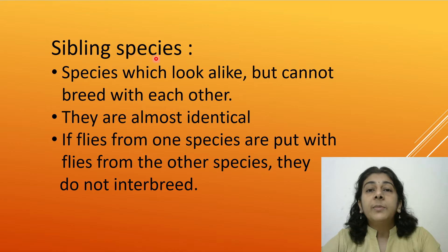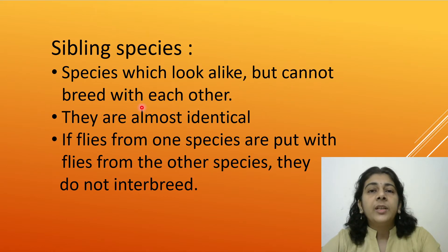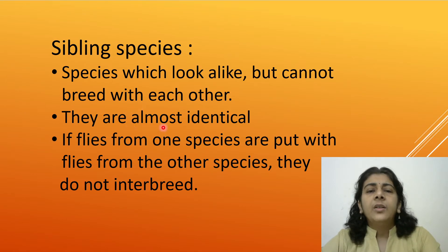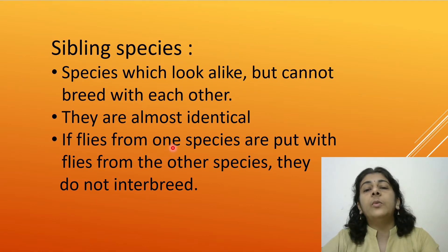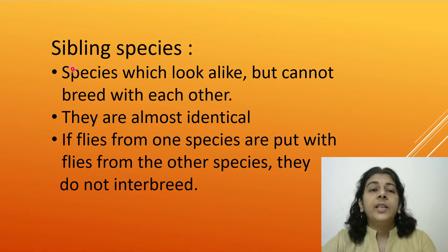The third option is Sibling species. We call them sibling species when they look alike but cannot breed with each other. Breeding cannot happen between them, but these species look almost identical. For example, flies from one species, when put with flies from another species, do not interbreed. These are called sibling species.